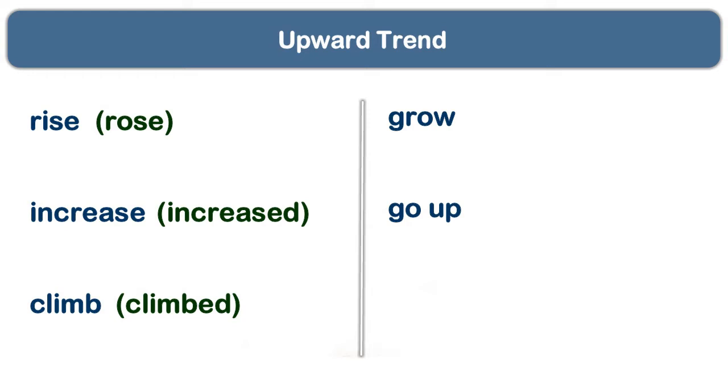We use these verbs in past simple. So the past forms are: increase → increased, climb → climbed, grow → grew, and go up → went up.